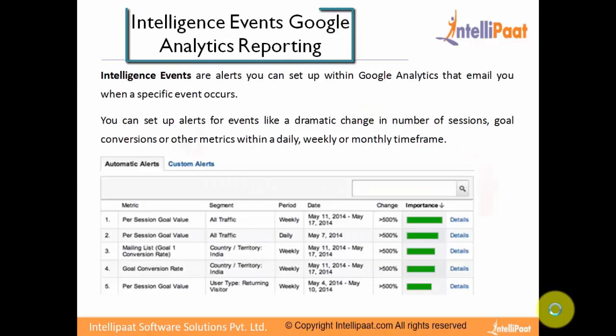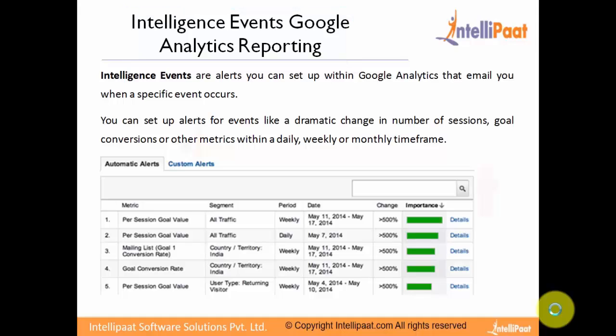Intelligence Events in Google Analytics reporting. Intelligence Events are alerts you can set up within Google Analytics that notify you when a specific event occurs. You can set up alerts for events like a dramatic change in the number of sessions, goal conversions, or other metrics within a daily, weekly, or monthly timeframe. In the snapshot, you would find the automatic alerts and custom alerts sessions.